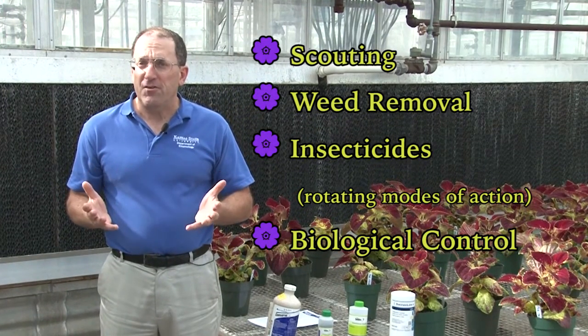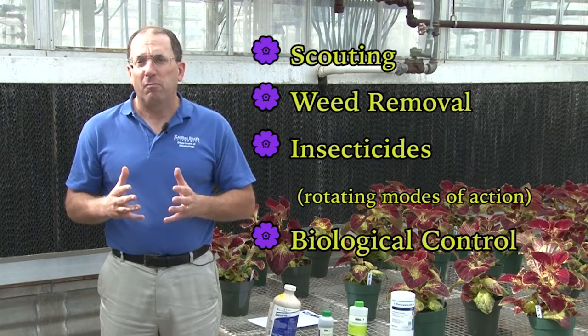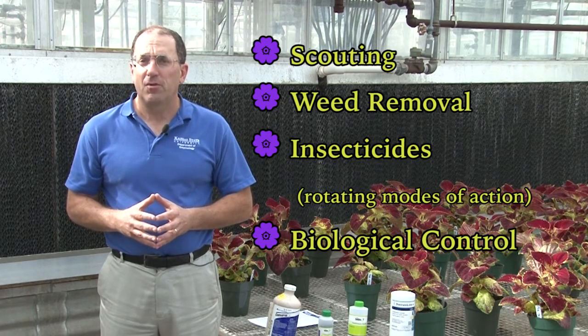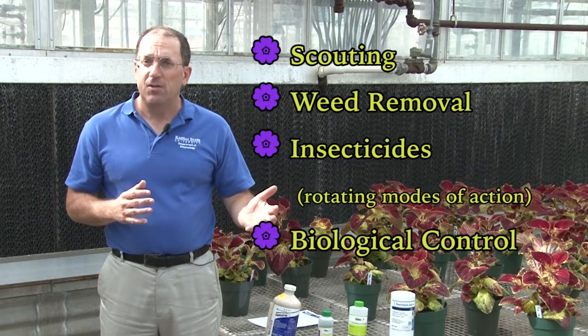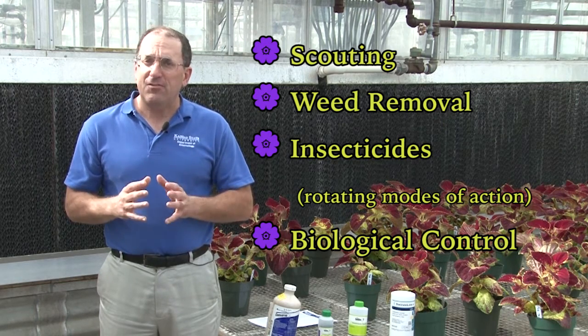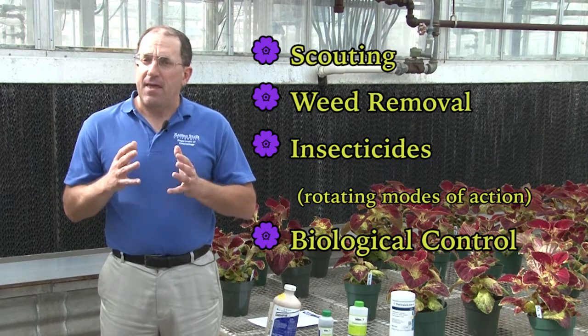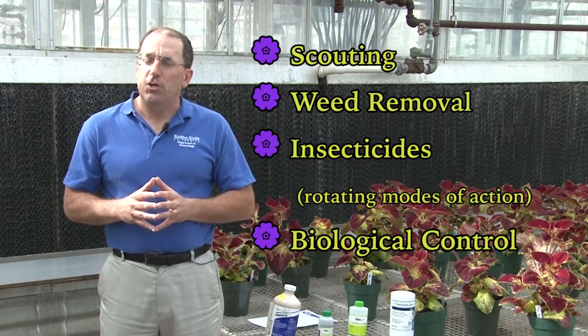In order to effectively deal with Western Flower Thrips in greenhouse production systems, it takes a holistic integrated strategy. This includes scouting, sanitation — that is, removing weeds, since many weeds within the greenhouse harbor and provide refuge for Western Flower Thrips — also the use of insecticides, being sure to always rotate modes of action, and lastly the use of biological control agents or natural enemies. There are a number that are commercially available, including predatory mites and a predatory bug.